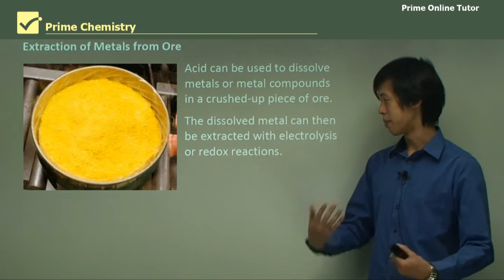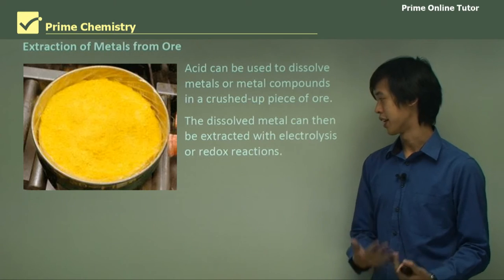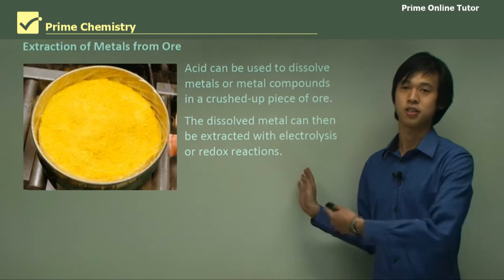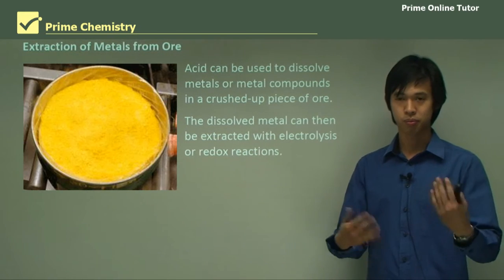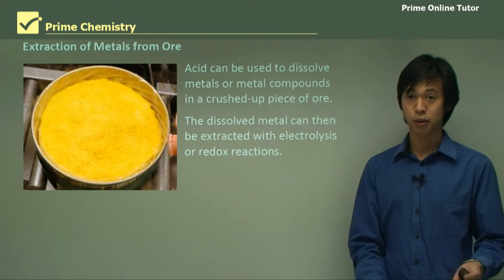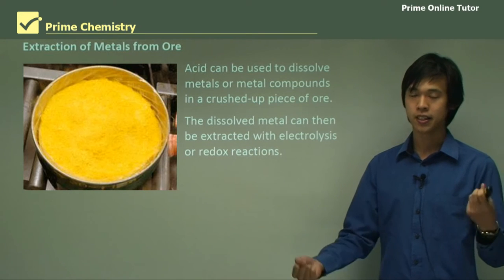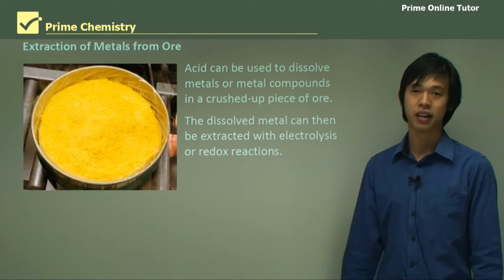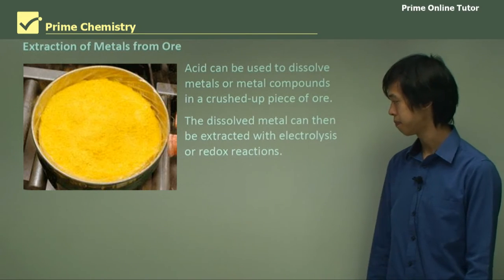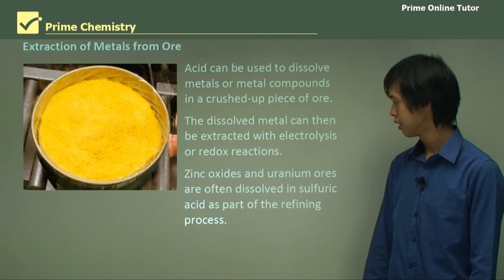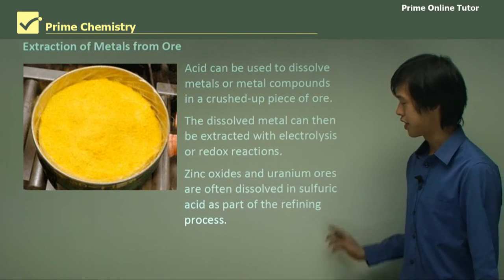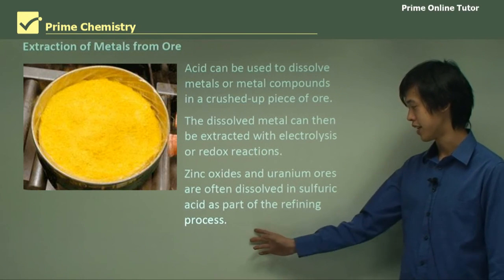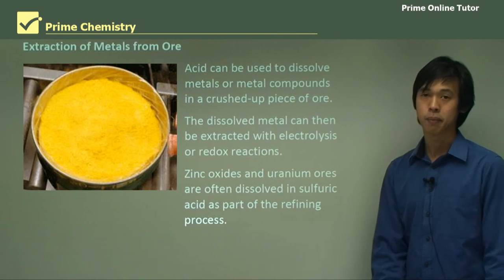The dissolved metal can then be extracted with electrolysis or redox reactions. We use electrochemical processes to refine and obtain the pure metal we want. For instance, zinc oxides and uranium ores are dissolved in sulfuric acid as part of the refining process.